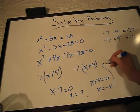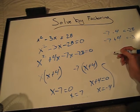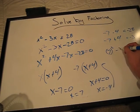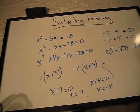Now we can check by putting these back into the original problem. We'll do x = 7 first: 7² - 3(7) = 28. That checks out.